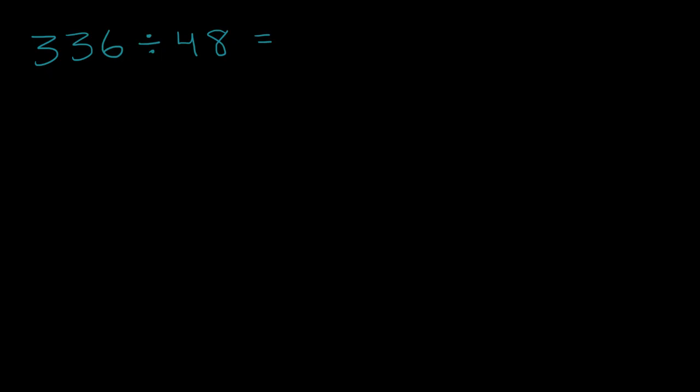So the way I would think about it, this thing right over here is close to 50. Close to 50. And if you think about the multiples of 50, you have things like 300, which would be 50 times six, and then you have 350, which would be 50 times seven, because five times seven is 35. And so let's think about this. Let me write these things down.